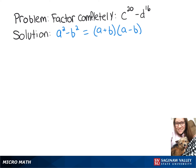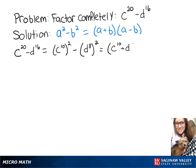We want to factor c to the 20th minus d to the 16th. To do that, we're going to use the difference of squares formula. We can rewrite that as c to the 10th squared minus d to the 8th squared. And now that comes out to c to the 10th plus d to the 8th times c to the 10th minus d to the 8th.